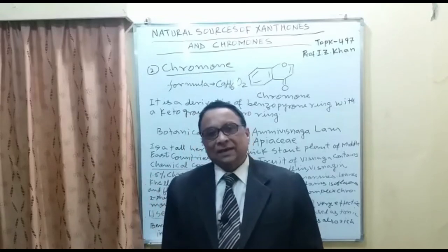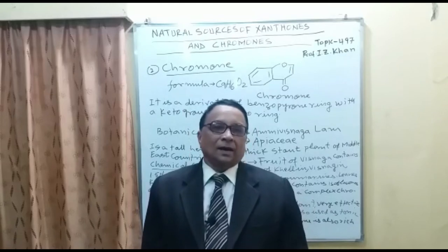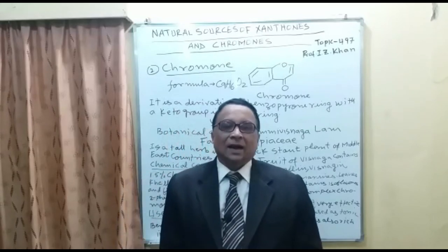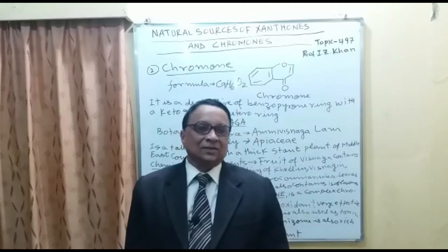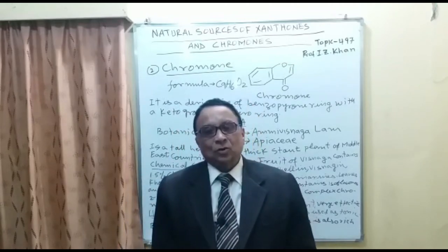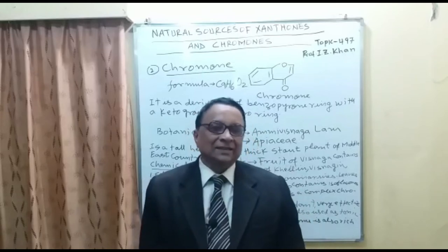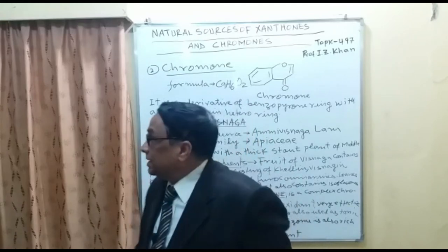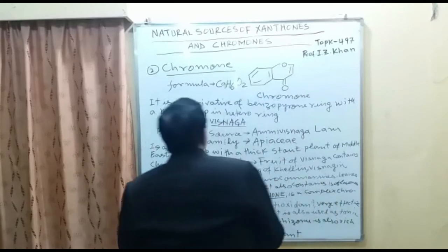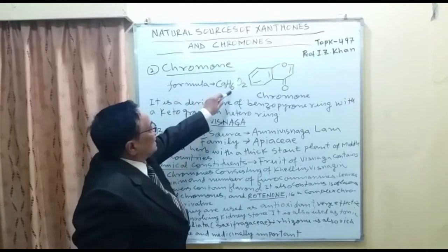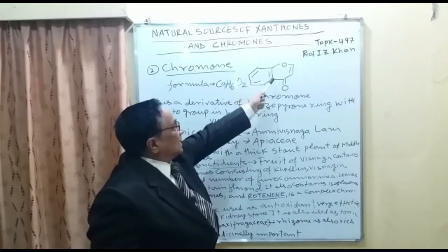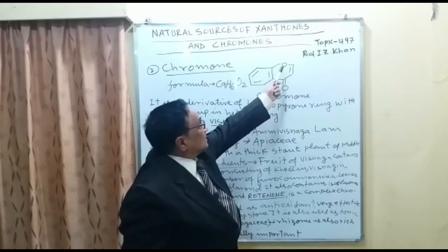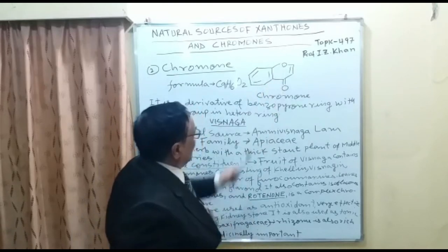The molecular formula of chromone is C9H6O2. It is also a very important antioxidant phenolic. Plants which are rich in chromone are used for patients who have kidney stones, as it can help dissolve kidney stones. It is also used as a tonic. The aromatic ring is condensed with one pyrone ring, with a heteroatom oxygen and one keto group present.